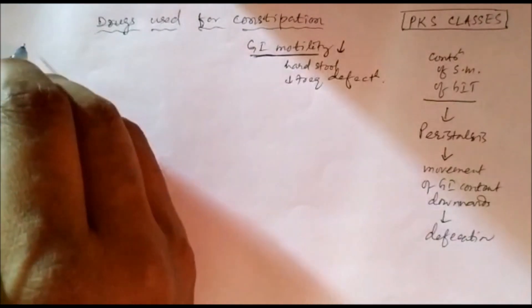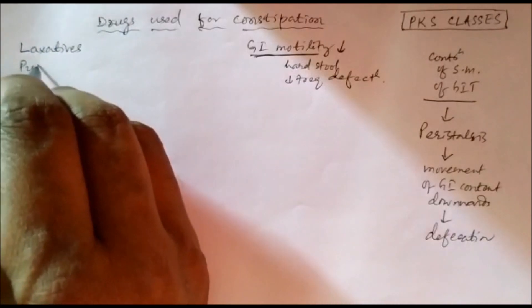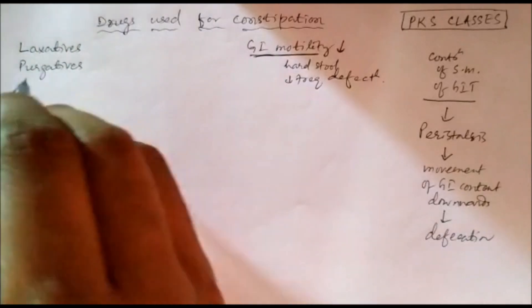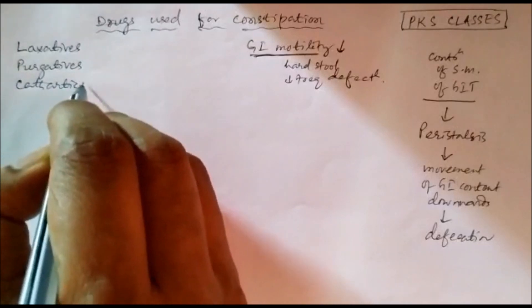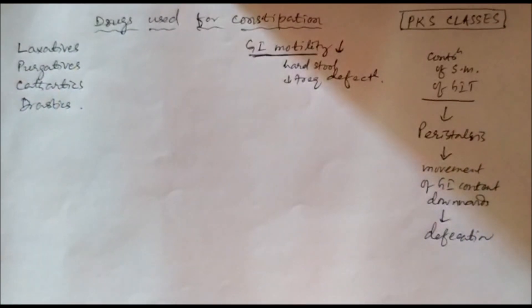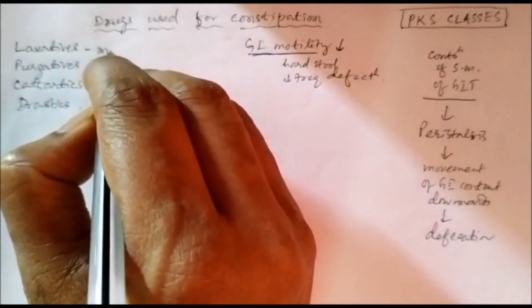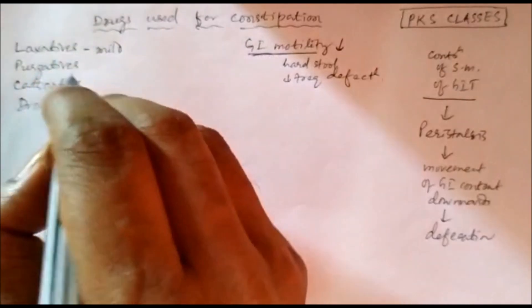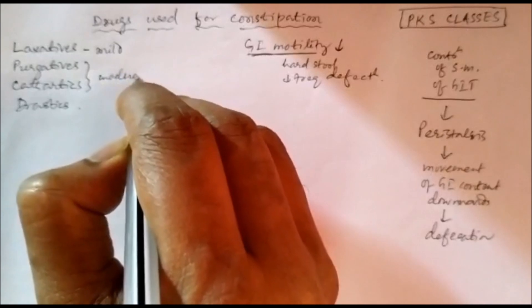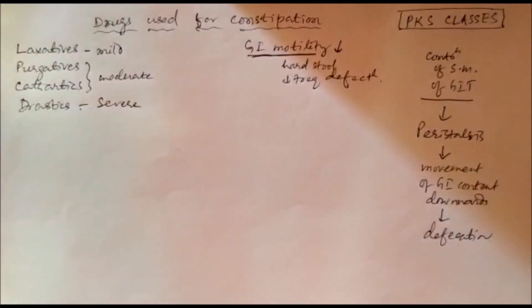The drugs used for constipation are also called laxatives, purgatives, cathartics, or drastics. These names relate to potency. When the action is mild, it is called a laxative; for moderate action, they are called purgatives or cathartics; for severe action, we call them drastics.